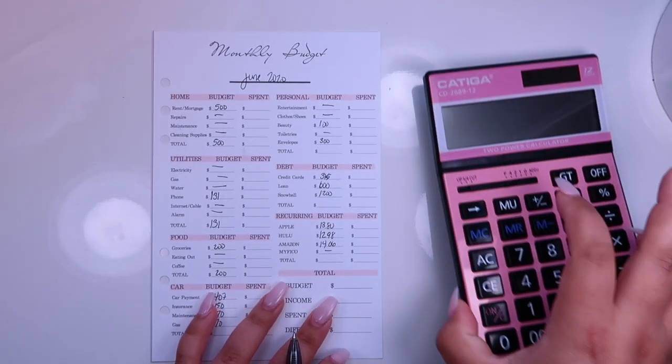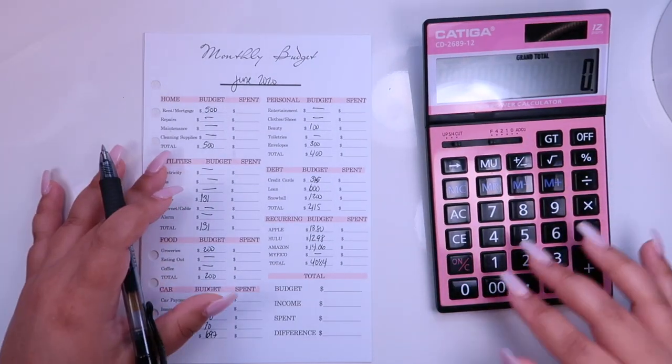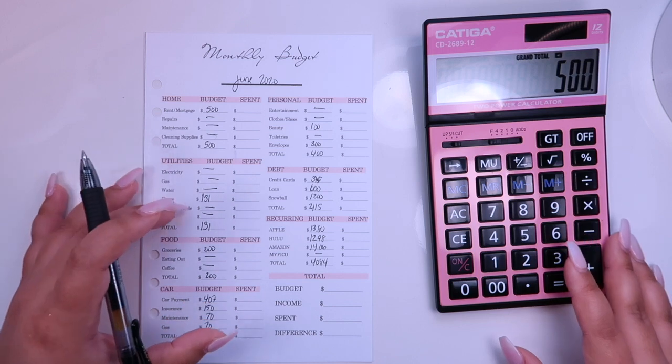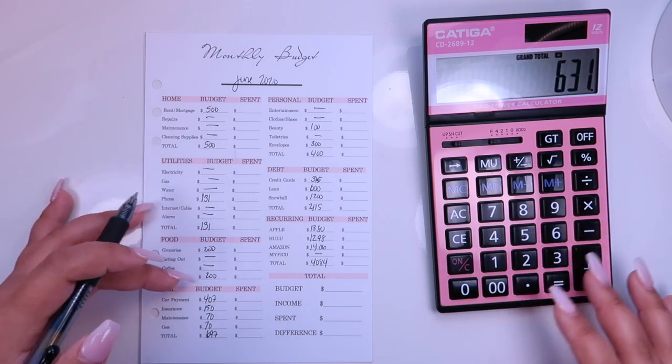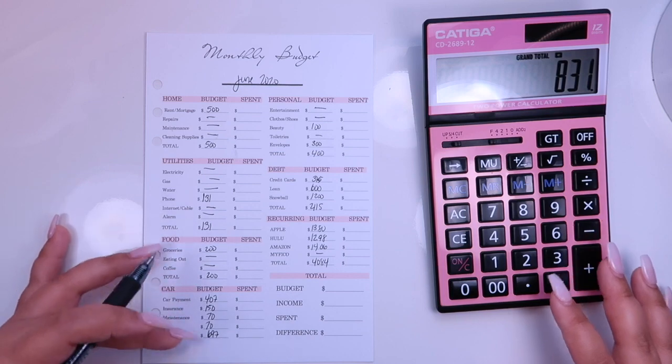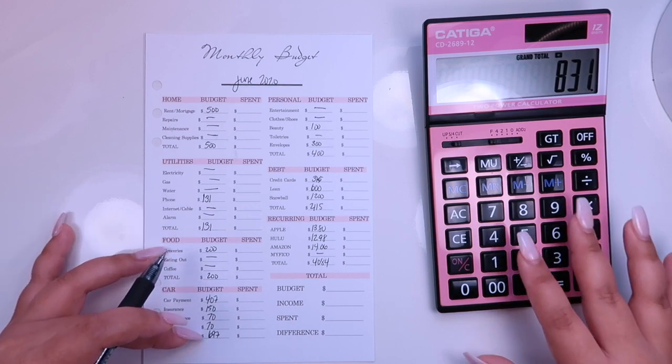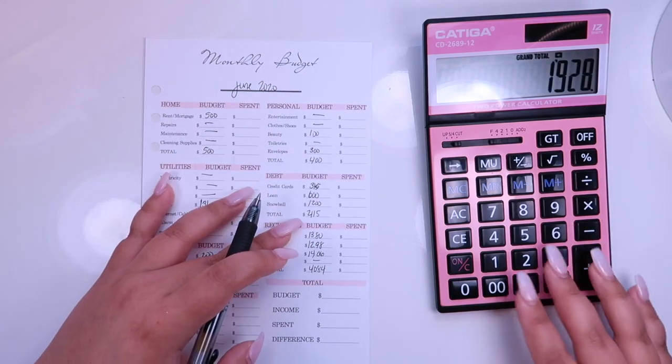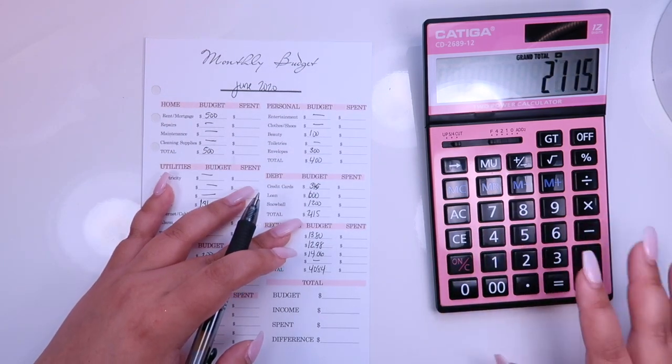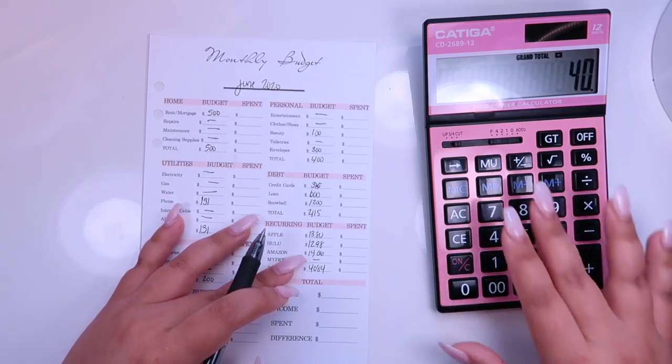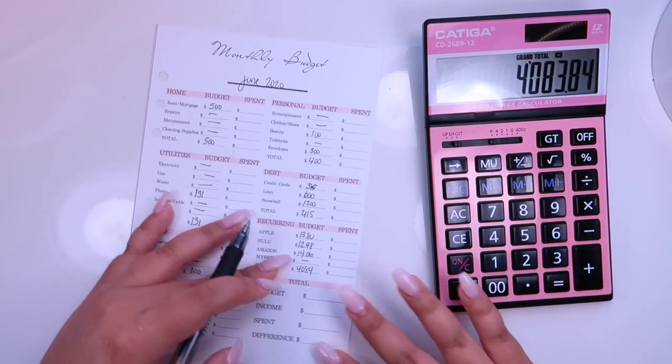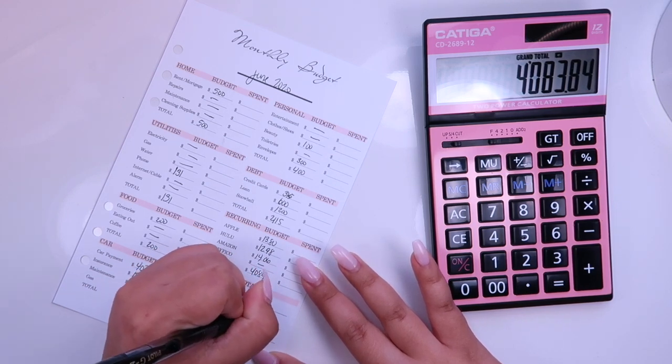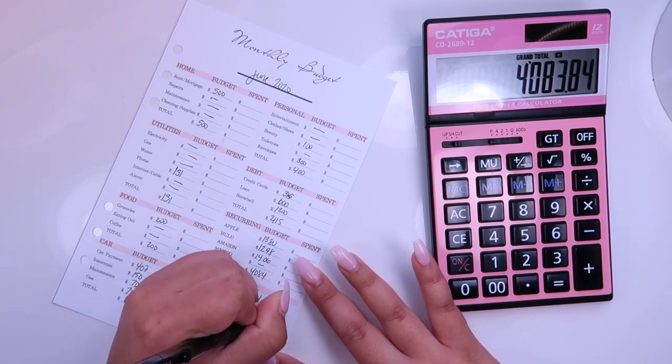So let me add these up. It's going to be $500 plus $131 plus $200 plus $697 plus $400 plus $2,015 and $40.84. So that's $4,083 and $84.